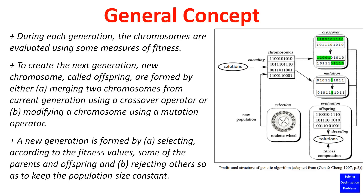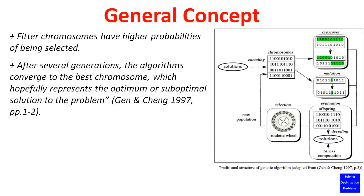A new generation is formed by: A) selecting, according to the fitness values, some of the parents and offspring, and B) rejecting others, so as to keep the population size constant. Fitter chromosomes have higher probabilities of being selected. After several generations, the algorithm converges to the best chromosome, which hopefully represents the optimum or suboptimal solution to the problem.